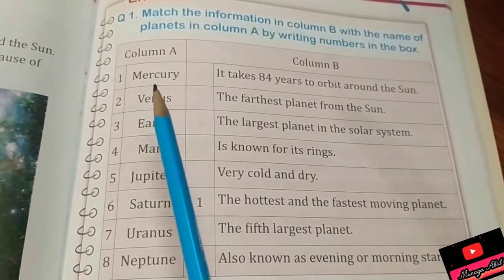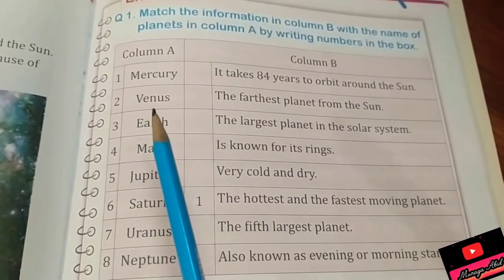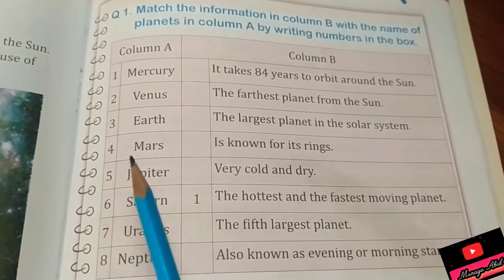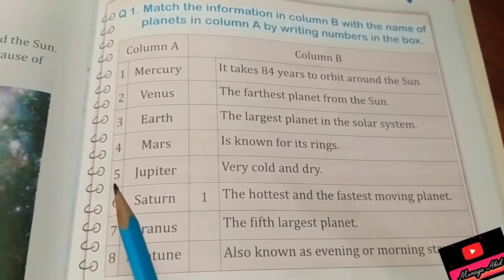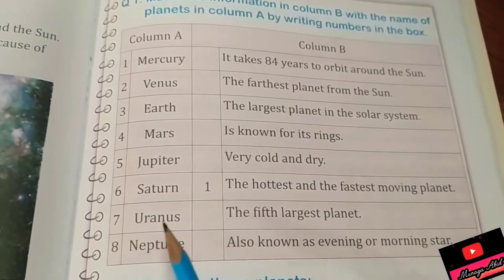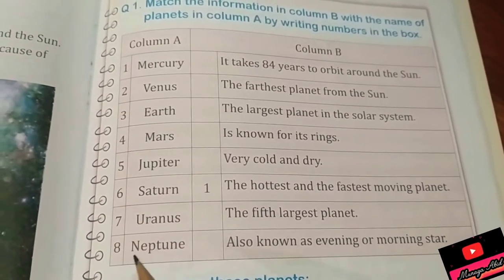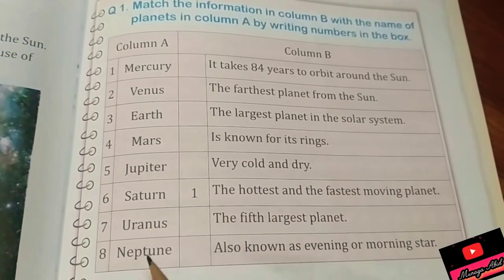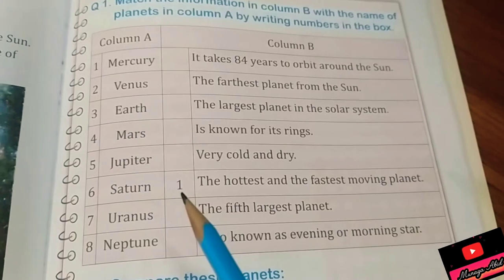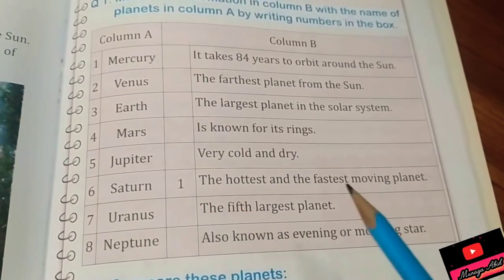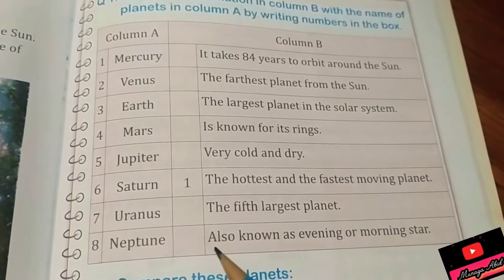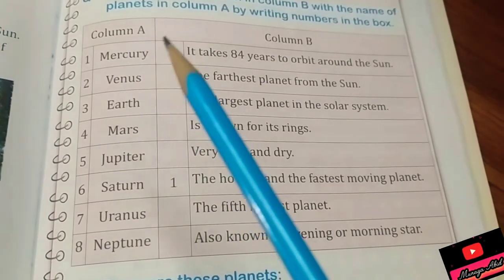Number one is Mercury, number two is Venus, number three is Earth, number four is Mars, number five is Jupiter, number six is Saturn, number seven is Uranus, number eight is Neptune. So they're saying that one means Mercury is the hottest and the fastest moving planet. Now we have to write the numbers of other planets in this column.